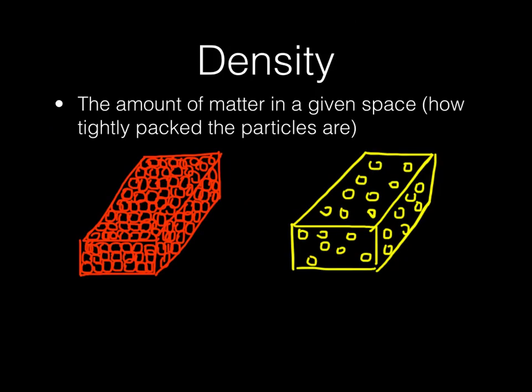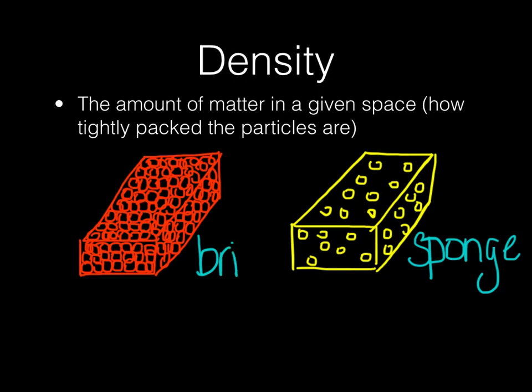So let's take a look at density. Density is the amount of matter in a given space, or how tightly packed the particles are. In the sponge, the particles are spaced very far apart. In a brick, which happens to be the same size, the particles are packed very, very closely together. So that means the brick is more dense than the sponge.